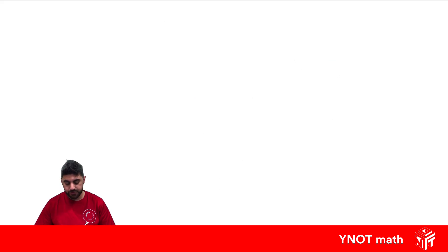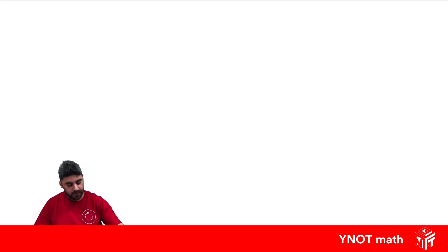Alright, let's look at cubes. 1 cubed, well that just means 1 times 1 times 1, and 1 times 1 times 1 is 1. 2 cubed means 2 times 2 times 2, and that's 8. 3 cubed means 3 times 3 times 3, which is 27.